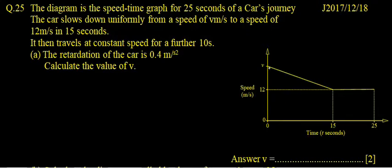In this 15 seconds, the speed of the car slows down from V to 12. It then travels at constant speed for a further 10 seconds.